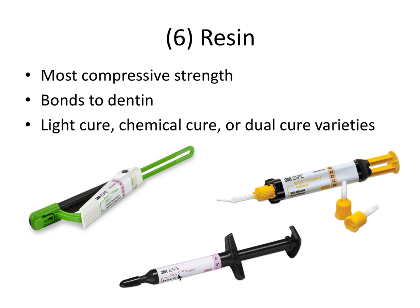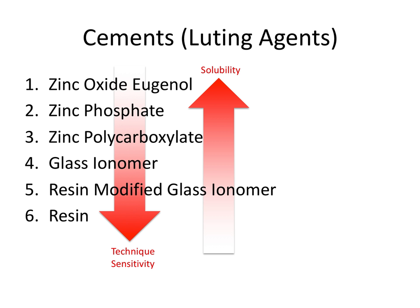The veneer cement is light cure only. The reason it's heavily favored for anterior veneers is that light cure cement is more color-stable than dual cure and chemical cure cements—and this is an excellent boards question. A chemical cure or dual cure cement experiences decomposition of its benzoyl peroxide component by a tertiary amine, which causes staining and discoloration of the cement over time. This would show through the thin veneer and affect the shade, hence why we use a light cure cement, which does not suffer from this discoloration problem.